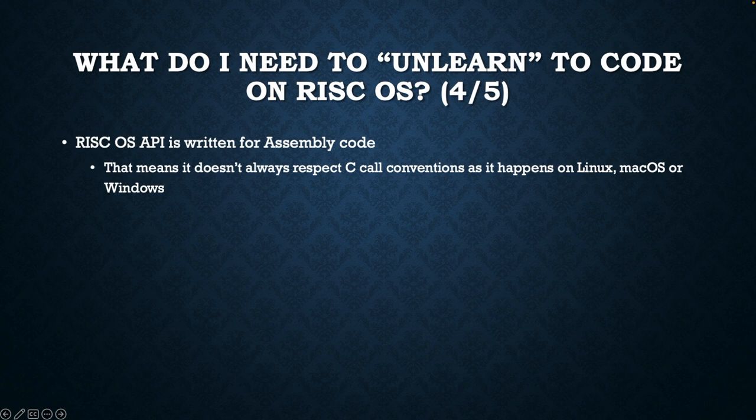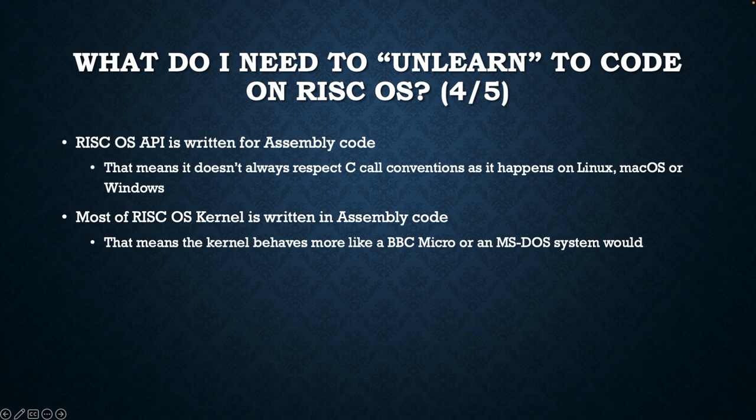The RISCOS API, or Application Programming Interface, is written for assembly code. That means it doesn't always respect ABI conventions as it happens on Linux, macOS, or Windows. Most of the RISCOS kernel is written in assembly code, meaning the kernel behaves more like a BBC Micro or an MS-DOS system would.